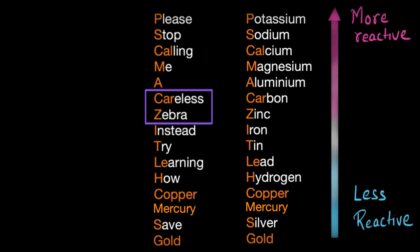Here we saw how displacement reaction can be used to figure out which metal is more reactive than the other. The more reactive metal will displace a less reactive metal from its compound. And using this, we arranged few metals according to their reactivity. And we also saw how to remember this whole reactivity series.